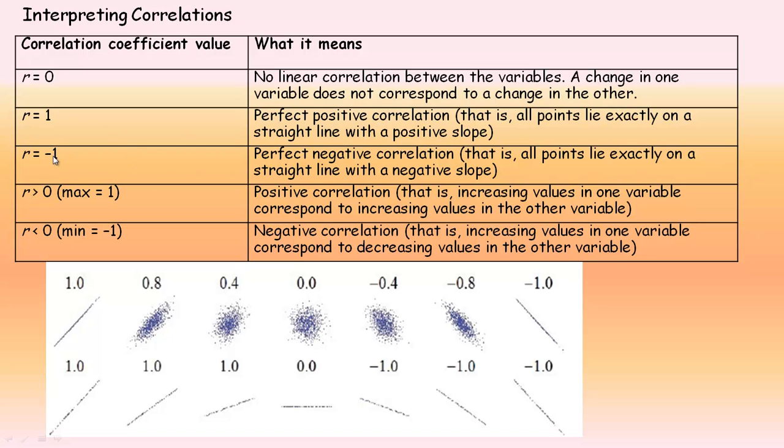A perfect correlation is if r is 1 or negative 1. One is a perfect positive correlation. If r is negative 1, it's a perfect negative correlation. If it was exactly those, all points lie exactly on a straight line with a positive slope here, a negative slope here. A positive correlation means as one variable increases, the other one increases. If it decreases, the other one decreases. That's a positive correlation. A negative correlation means as one variable increases, the other decreases.